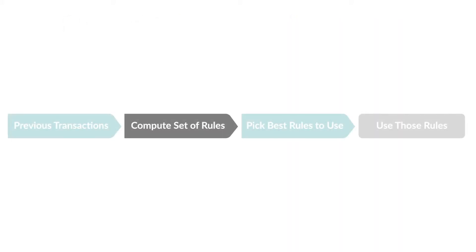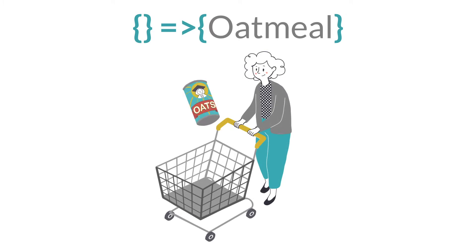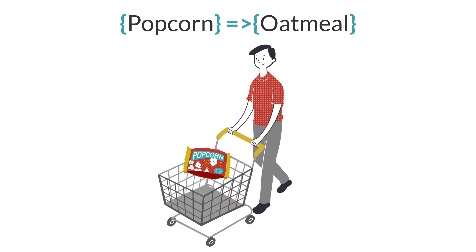Now we're in the compute set of rules part of our flowchart. Rules we could compute from our grocery data include the following. The most simple rule says if the customer starts with an empty basket, he or she will put oatmeal in it. A slightly more complex rule has popcorn as the antecedent, meaning the customer already has popcorn in the cart, and the rule says that oatmeal will also be added.